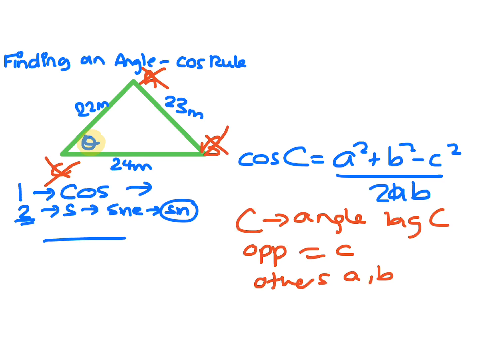So that means this is the big C, opposite is little c, the other sides are a and b. All that's left is to put it back into your formula. So you've got cos of C, and cos of C means that is just the angle. So cos of C would be cos of theta. Now the formula says a squared plus b squared.